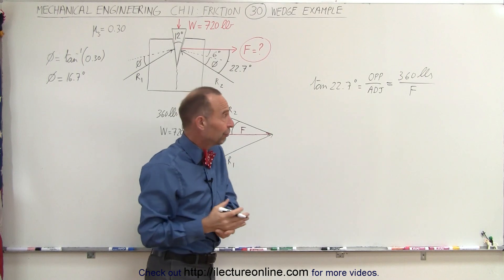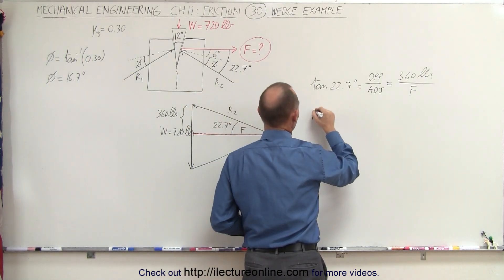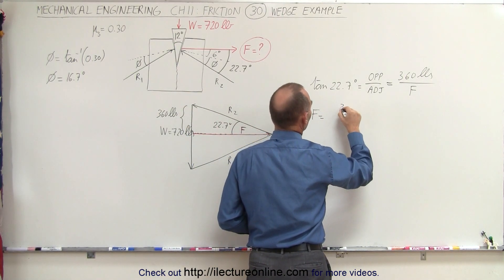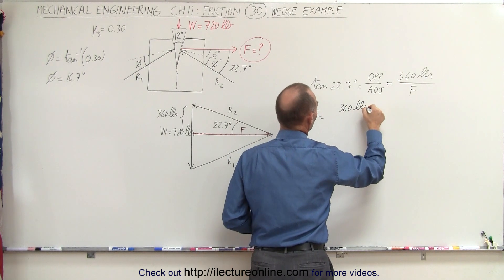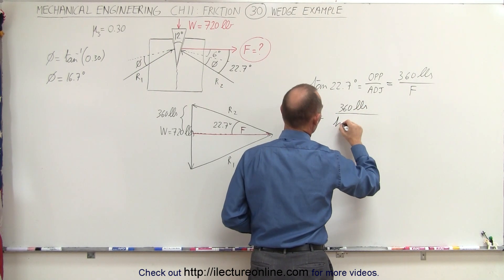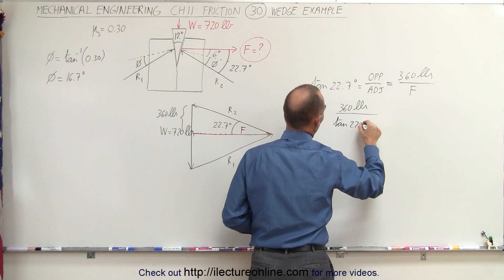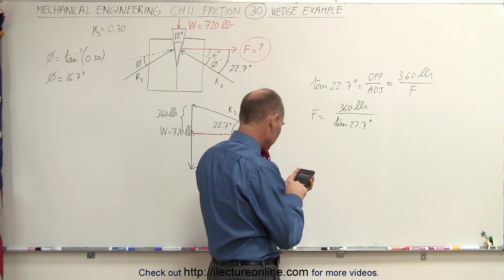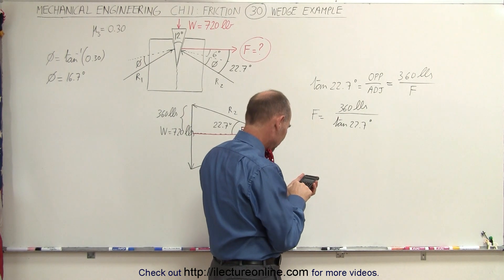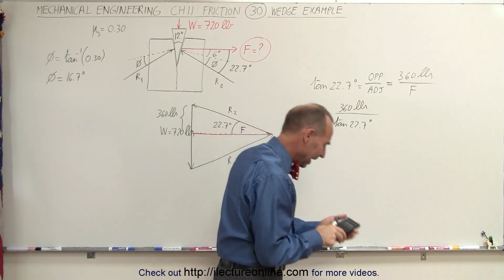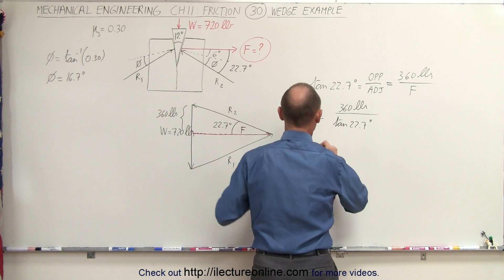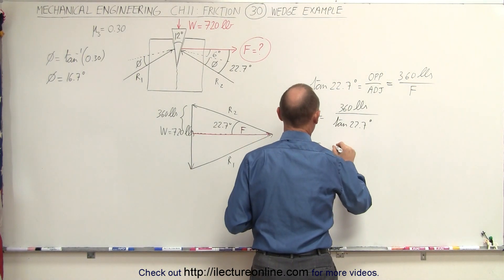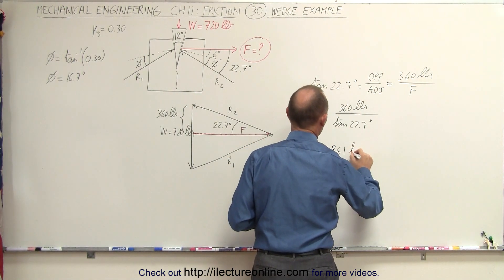That allows us to solve for the force. F equals 360 pounds divided by the tangent of 22.7 degrees. That gives us a force of 861 pounds.